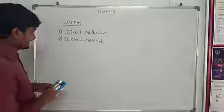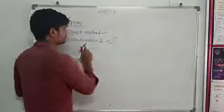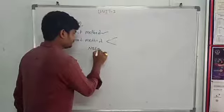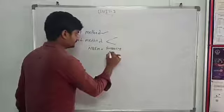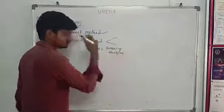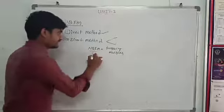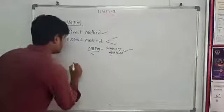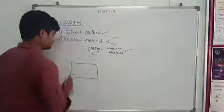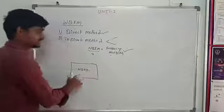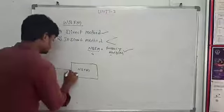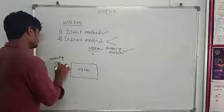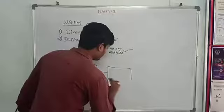Next, the indirect method for wide band FM. In the indirect method, we use narrow band FM plus a frequency multiplier. These are two components: first we generate narrow band FM, then we apply a frequency multiplier. This is the block diagram showing the modulating signal going into the narrow band FM block, followed by the frequency multiplier.